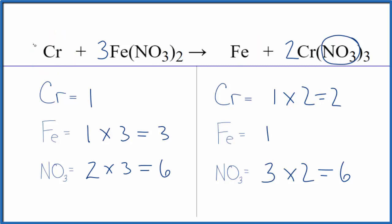They're easy to fix. Just put a 2 here—1 times 2 equals 2 chromiums. For the iron I need 3, so I'll put a coefficient of 3—1 times 3 equals 3 irons. We're done. This equation is balanced.